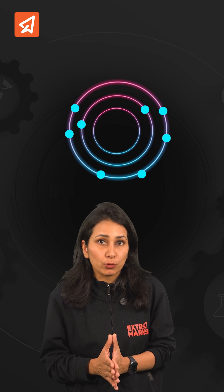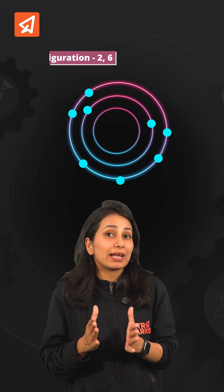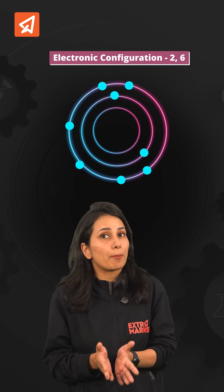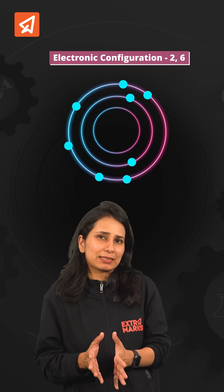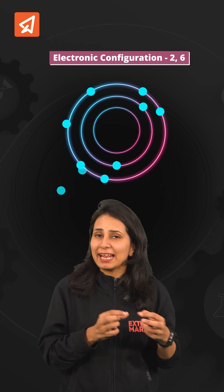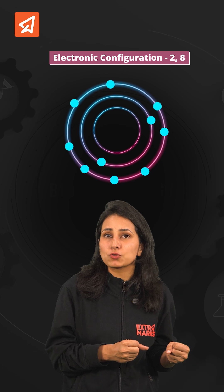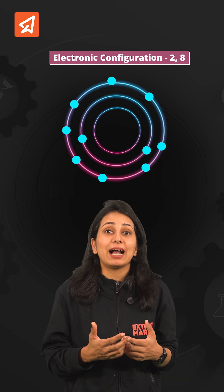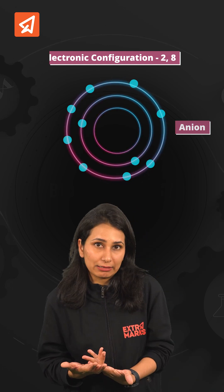In the first element, there are a total of eight protons and the electronic configuration is 2,6. It means it will gain two electrons to complete its octet, and it becomes an anion.